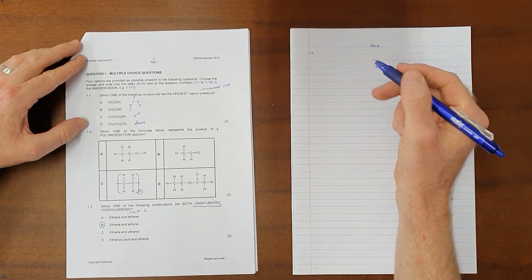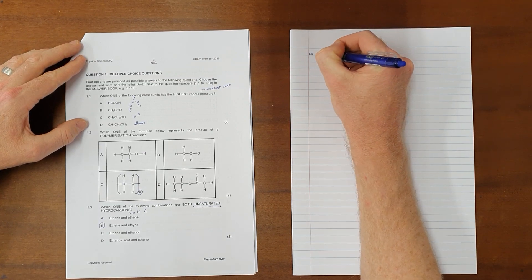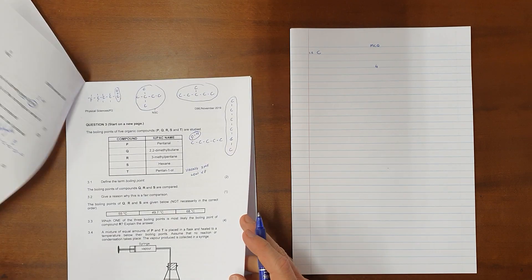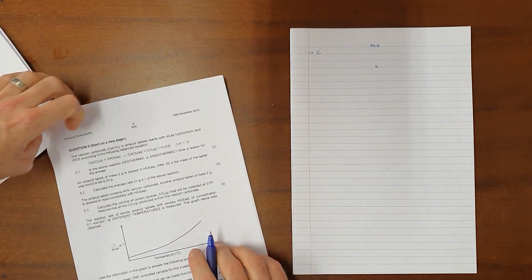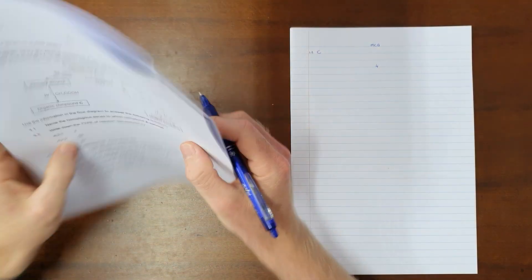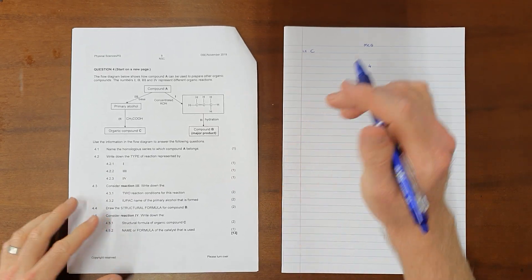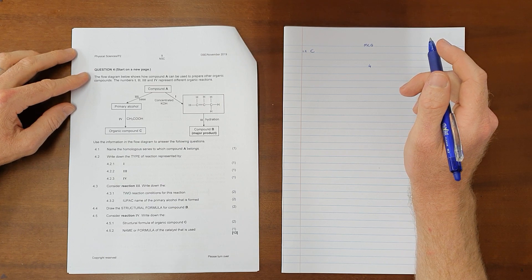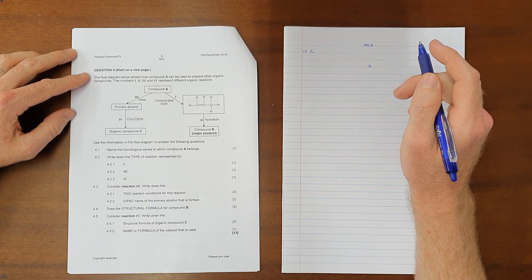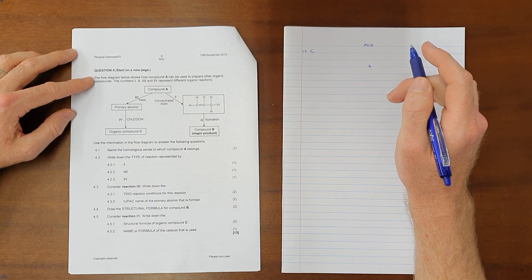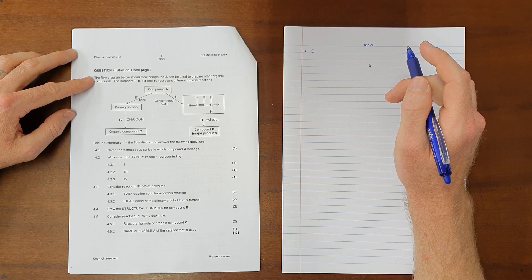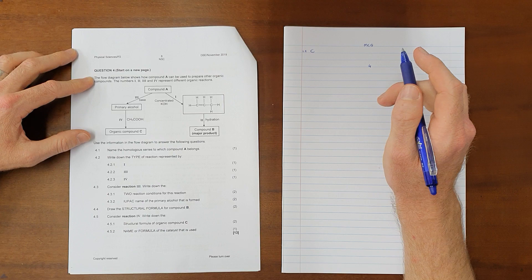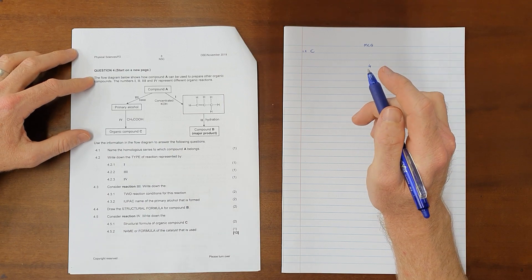Which means that the correct answer for question 1.2 is option C. The organic reactions question is then usually question 4. Question 4 reads as follows: The flow diagram below shows how compound A can be used to prepare other organic compounds. The numbers 1, 2, 3 and 4 represent different organic reactions. Use the information in the flow diagram to answer the following questions.